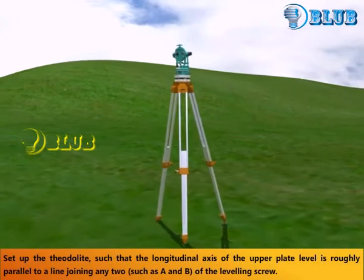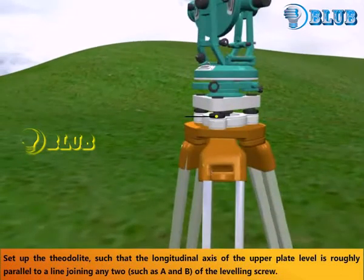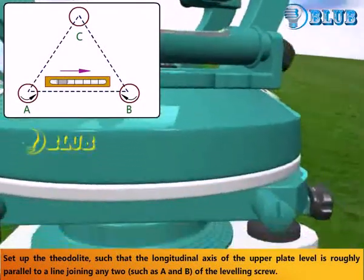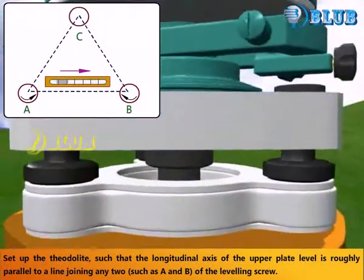Set up the theodolite such that the longitudinal axis of the upper plate level is roughly parallel to a line joining any two, such as A and B, of the leveling screw.